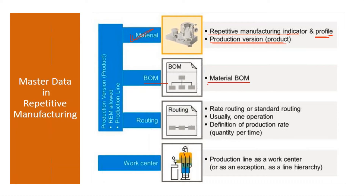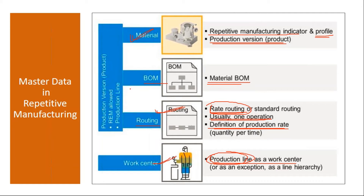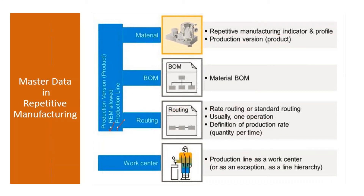You need to create the Bill of Material (BOM). There are no changes in the BOM. For the routing, the task list here is called rate routing, and it normally has only one operation. In rate routing, you define the production rate — that is why it is called rate routing. There is a separate transaction for this. The work center here is called a production line, where all machines are clubbed into one single production line. For the BOM and rate routing combination, we create a production version, and in the production version you need to make some extra settings.